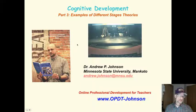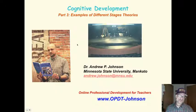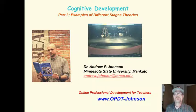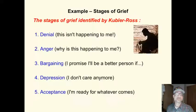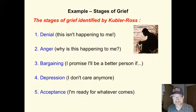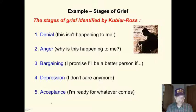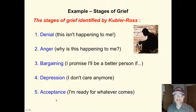We're still talking about cognitive development and stage theories. This is just to give you some examples of stage theories of which you may be aware. First of all, we've all heard of the stages of grief, identified by Kubler-Ross. You have to go through these different stages before you come to accept death or whatever bad thing happens. Stages of grief — familiar — an example of stage theory.